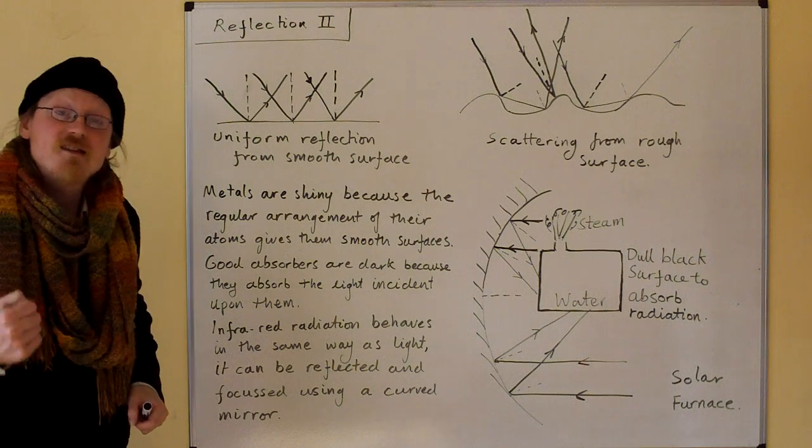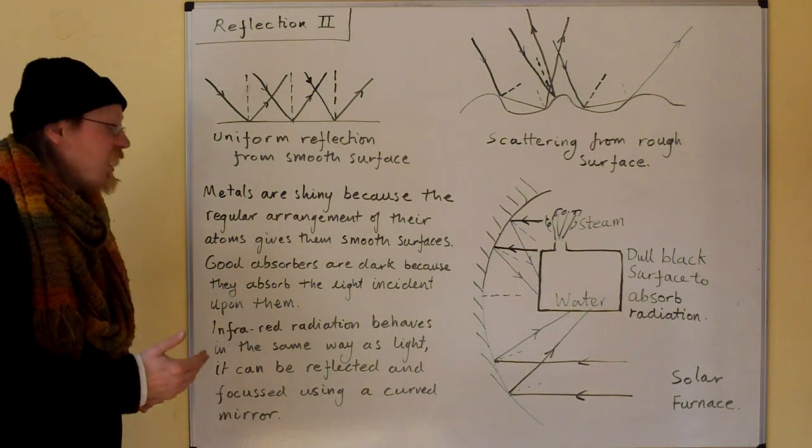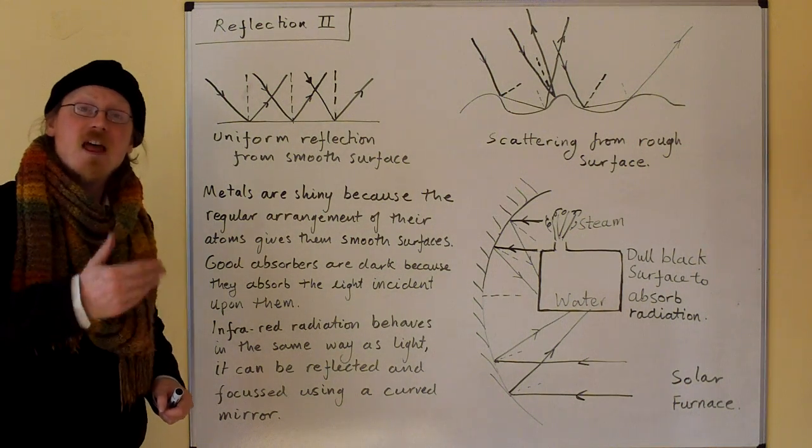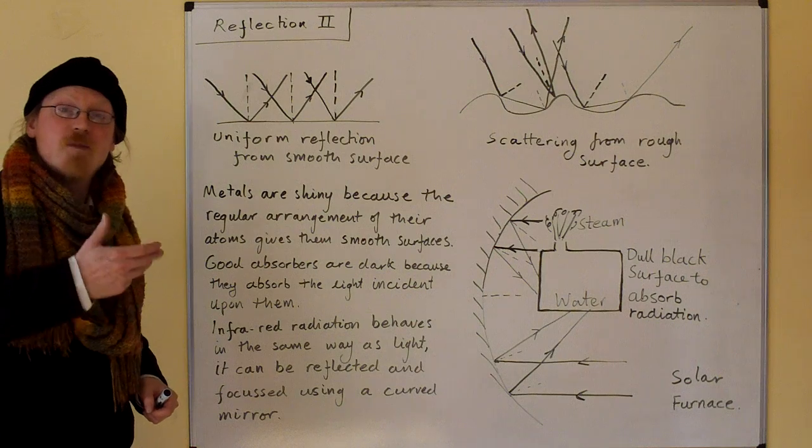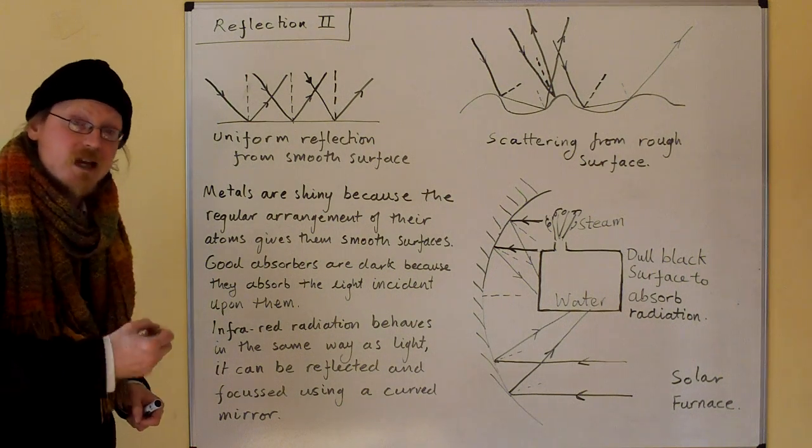Good absorbers are dark because they absorb the light incident upon them. That's what makes them dark. They absorb the incident light, and that's what makes them dark.